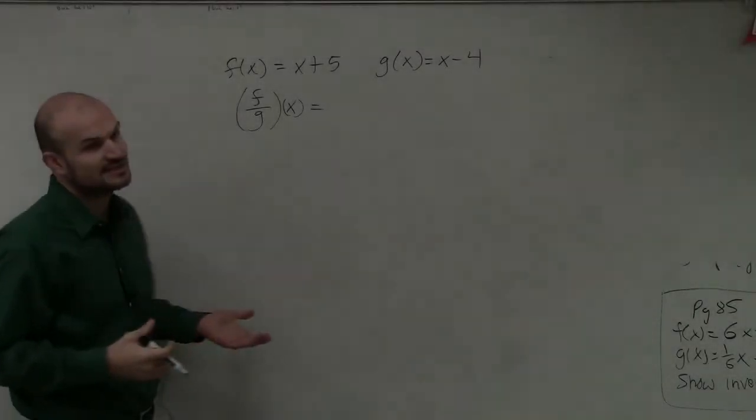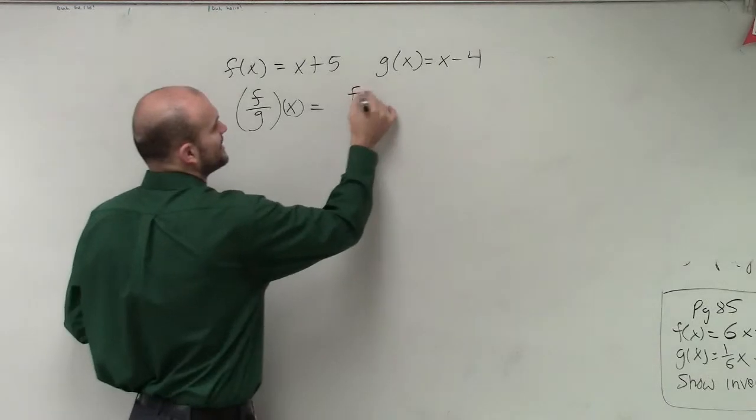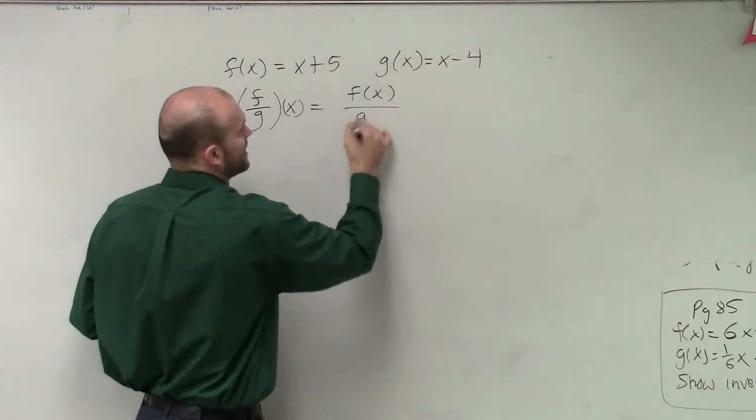F divided by G, or f of x divided by g of x, simply means f of x divided by g of x.